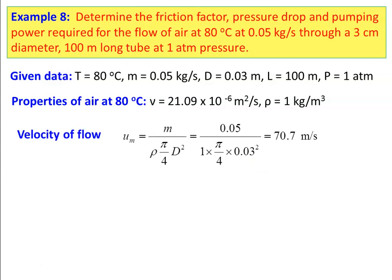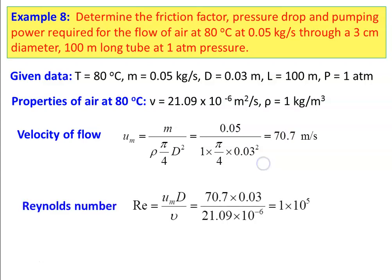The mean velocity: Um = m / (ρ × π/4 × D²) = 0.05 / (1 × π/4 × 0.03²) = 70.7 m/s. Reynolds number Re = Um × D / ν = 70.7 × 0.03 / (21.09 × 10⁻⁶) = 1 × 10⁵. Since Re > 2300, the flow is turbulent.